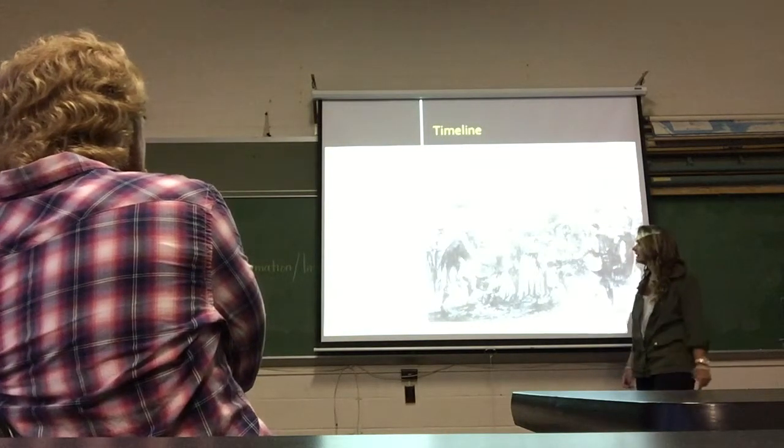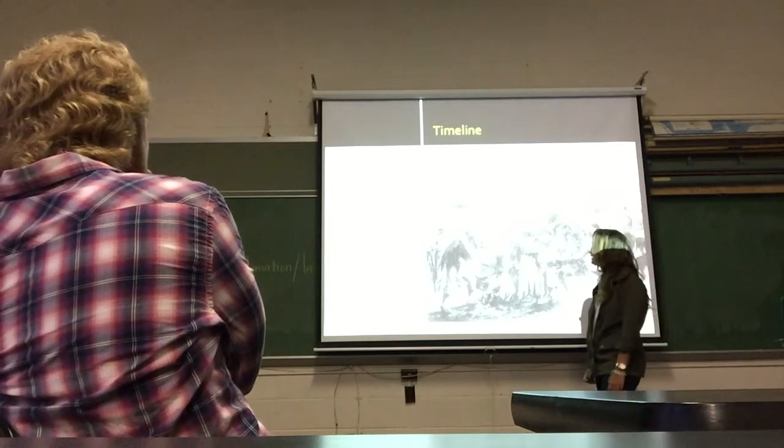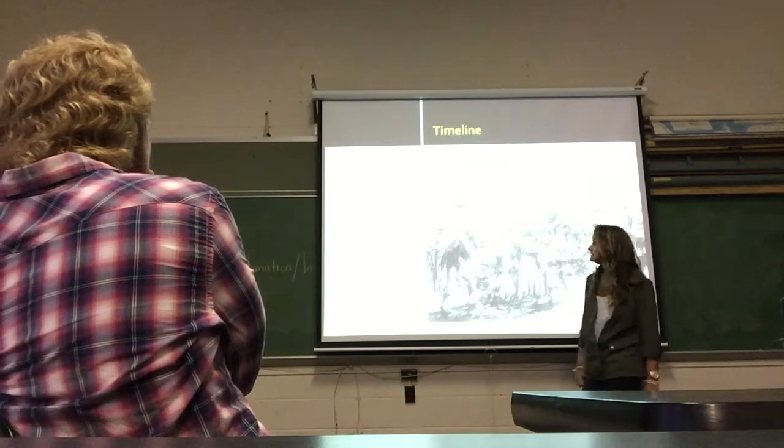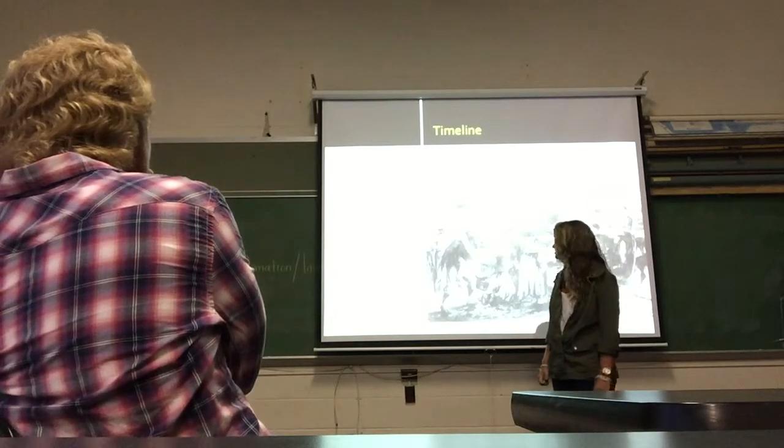This is a timeline of what has happened throughout the Underground Railroad, some important dates. In 1960, 20 captive slaves were sold in Jamestown, Virginia.